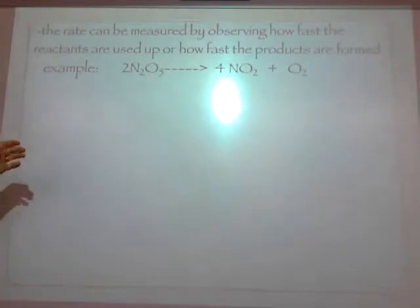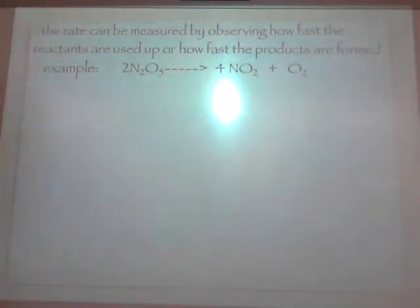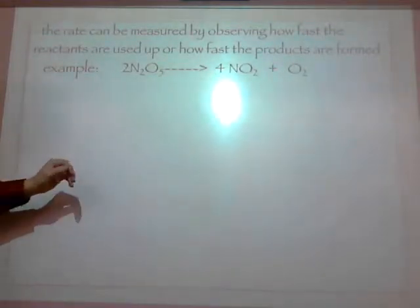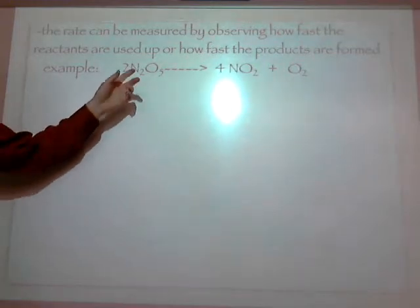We're going to take a real life equation this time. Not just A plus B yield C. And we'll take coefficients in here as well. So, that's my equation: 2N₂O₅ yields 4NO₂ plus O₂.